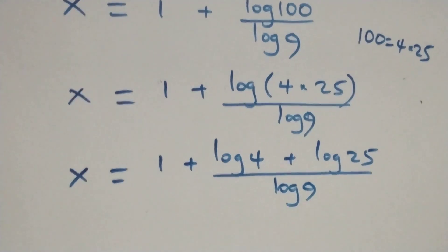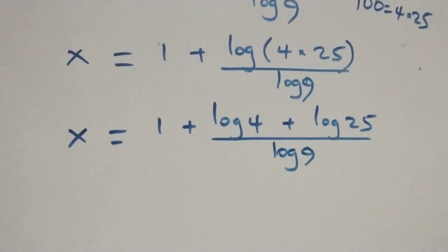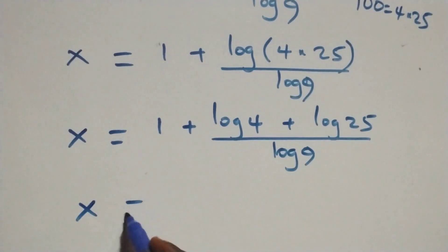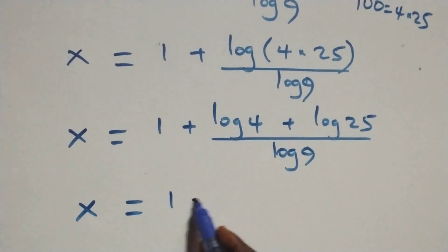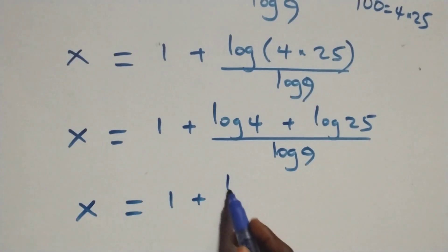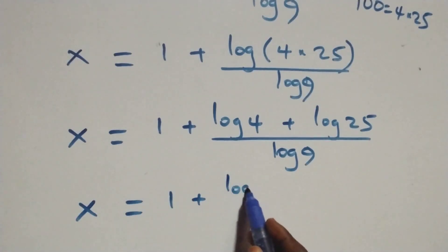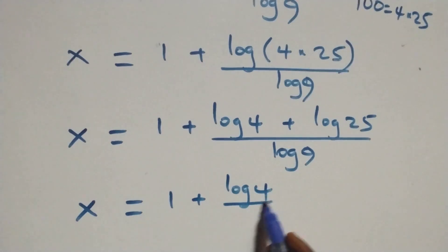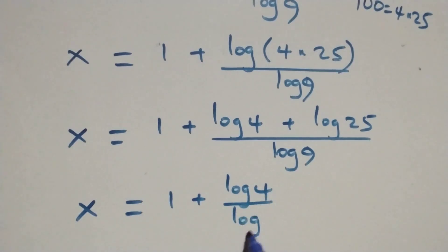That is here we can rewrite it. We have x equals to 1 plus (log 4 over log 9) plus (log 25 over log 9).